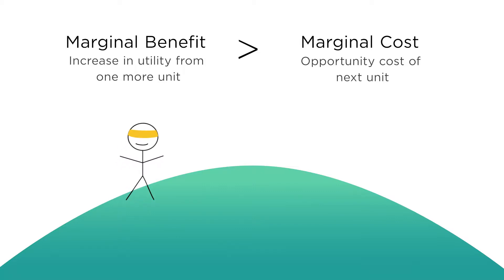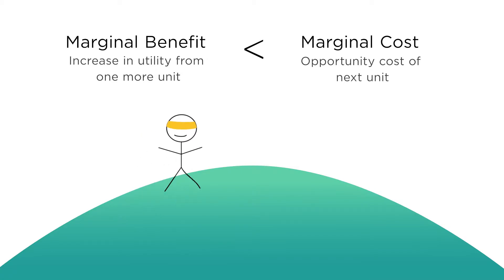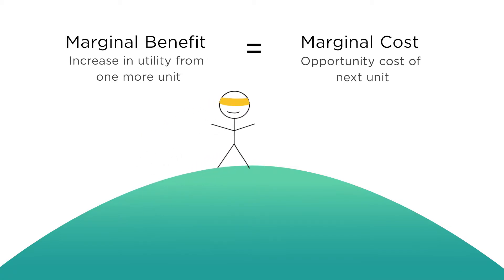If the marginal benefit is less than the marginal cost, you should eat less pizza, going back down the utility hill. If the marginal benefit is equal to the marginal cost, you should stop right there — you're on top of the utility hill.